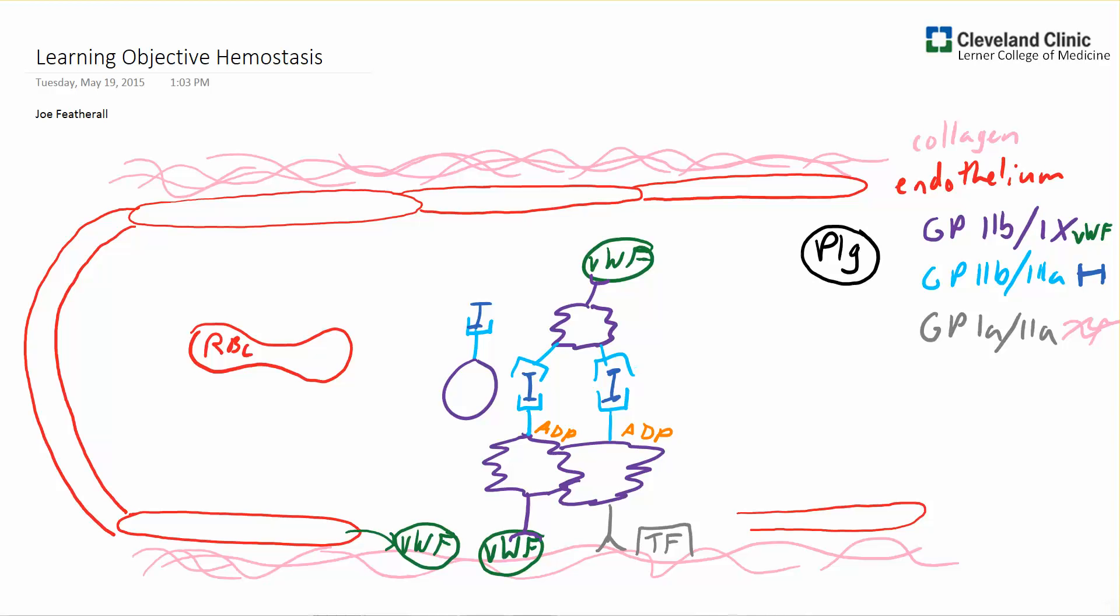And this is provided by secondary hemostasis that's known as the coagulation cascade. And this is started directly by tissue factor. Tissue factor starts the induction of the extrinsic pathway.